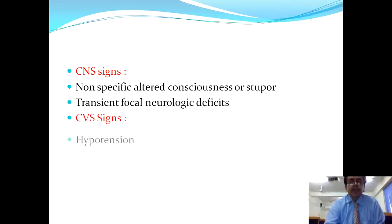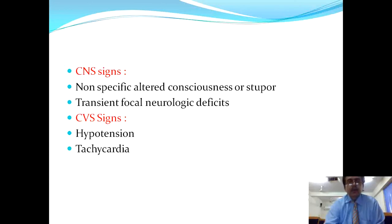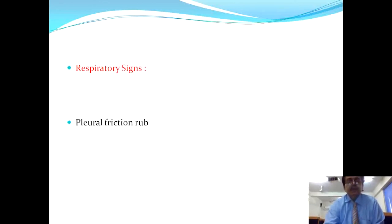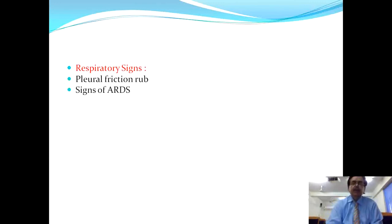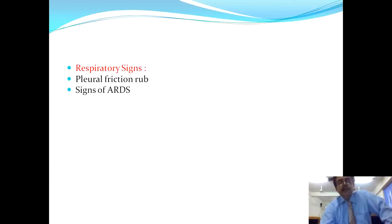CVS signs include the patient being found in a hypotensive state, with tachycardia and circulatory collapse or shock-like state. In the respiratory system, the patient may have pleural friction rub or signs of adult respiratory distress syndrome — a leaky lung syndrome in which infiltrate goes into the alveoli, resulting in microthrombi or fibrin deposition in the alveolar spaces. These are not removable by drugs.